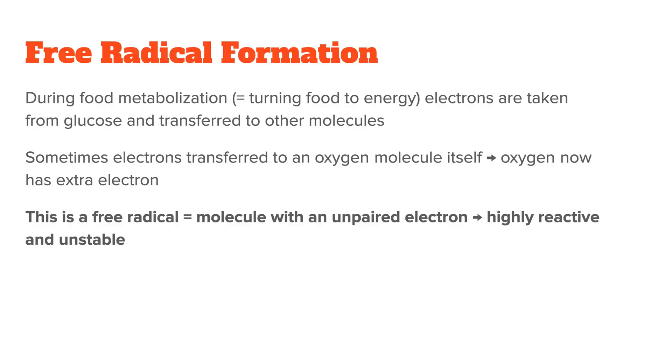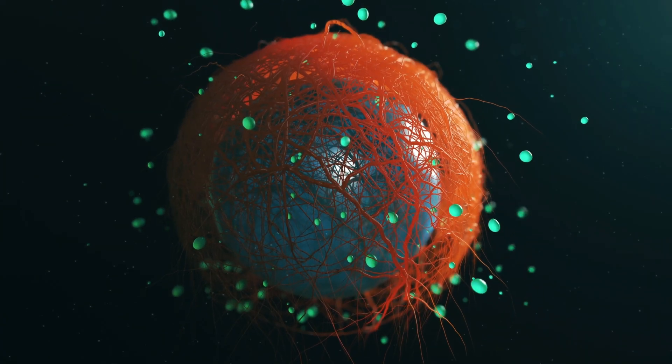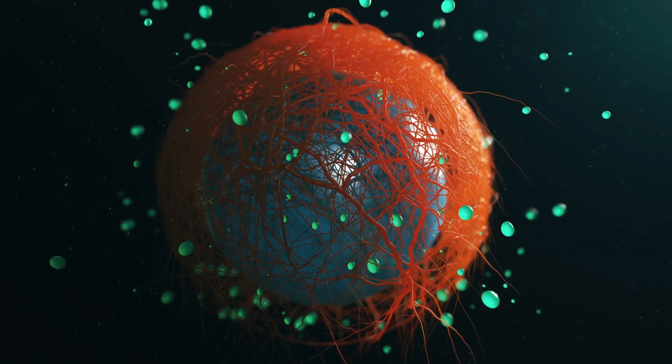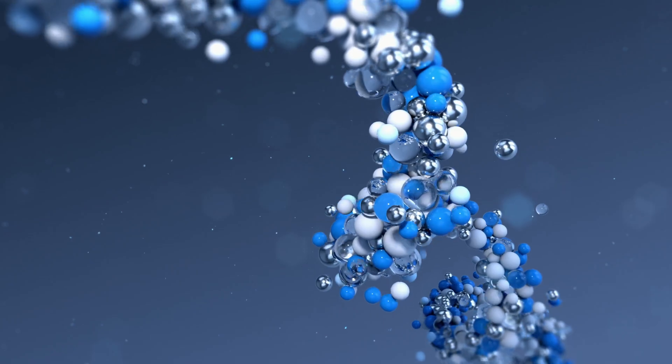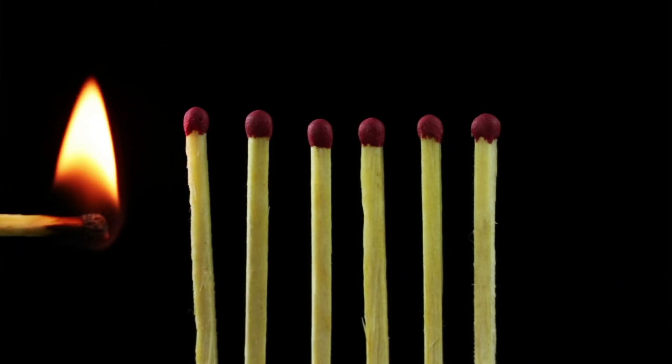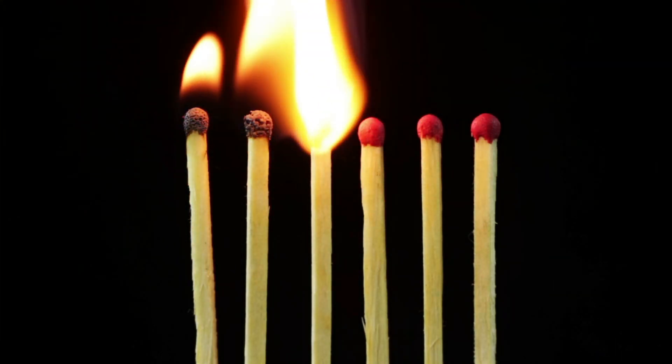A free radical is a molecule with an unpaired electron. It looks for surrounding electrons that it can pair with, because without it, it is highly reactive and unstable. So it will grab the missing electron from surrounding molecules — and these can really be anything: your tissue, your organs, or even your DNA. Once it has grabbed an electron and paired it, it is stable again, but the molecule it took from is now unstable. This sets off a chain reaction where each molecule gets robbed of an electron and then itself becomes an electron thief. This chain reaction would destroy your entire body if it couldn't be stopped naturally by the body.